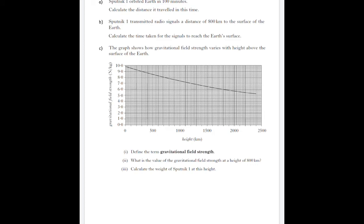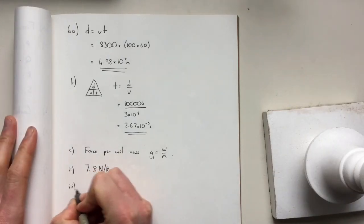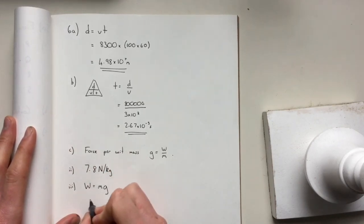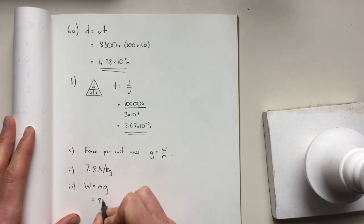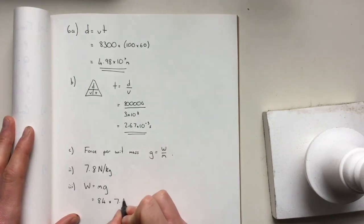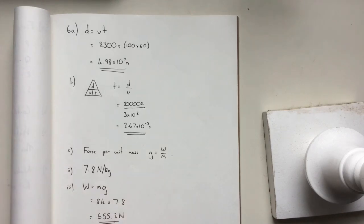The last one asks, calculate the weight of Sputnik 1 at this height. Weight is an equation we should know, W equals Mg. The mass is 84, and the gravitational field strength you just found is 7.8. That times that is 655.2. There we have it.